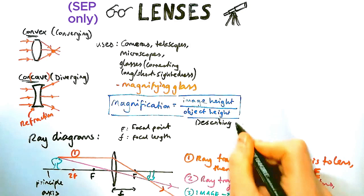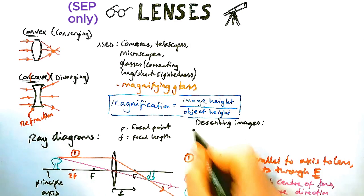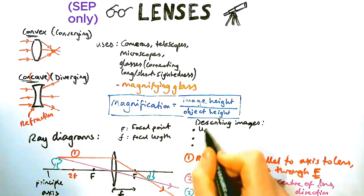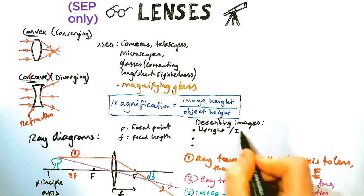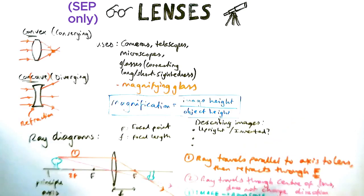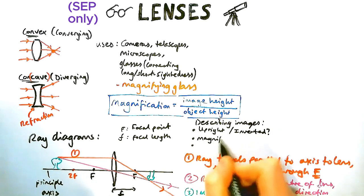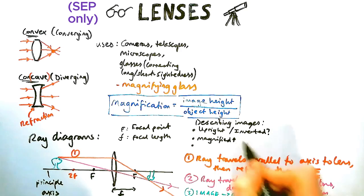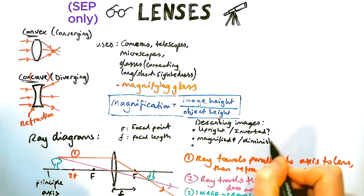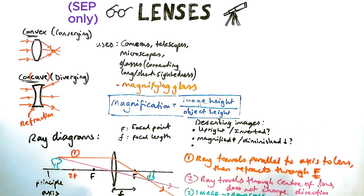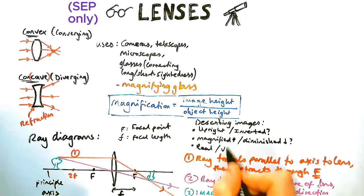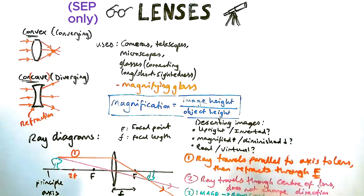So as well as drawing these diagrams, you need to be able to describe the images according to three criteria. So criteria one is, is it upright or inverted? Is it upright or upside down? Criteria two, is it magnified, i.e. got bigger, or diminished, i.e. got smaller? And number three, is it a real image or a virtual image?